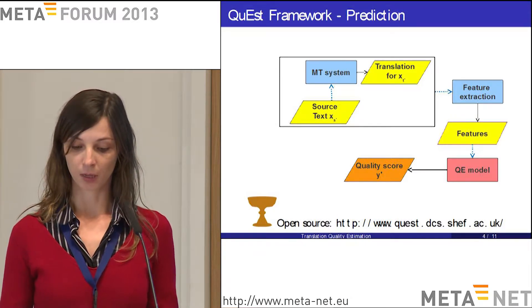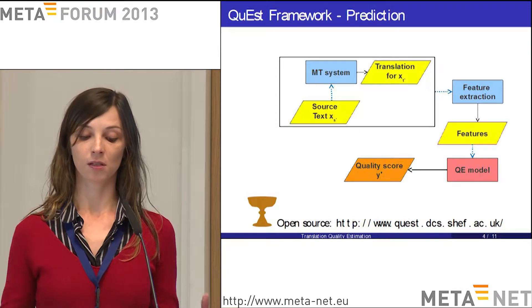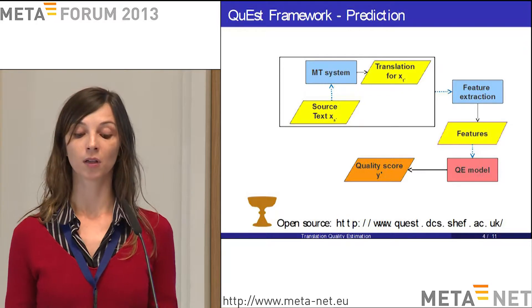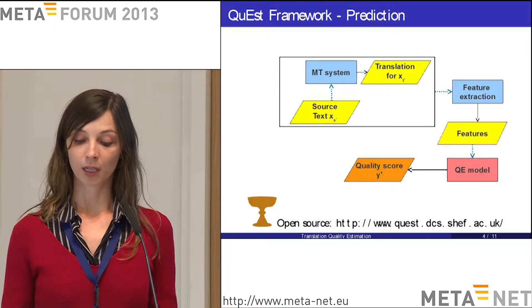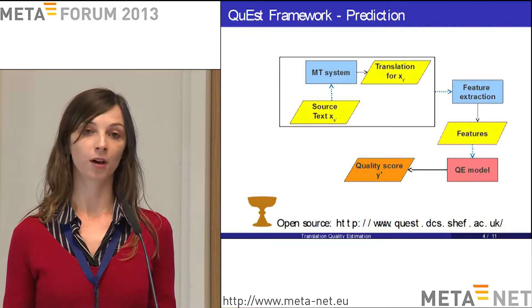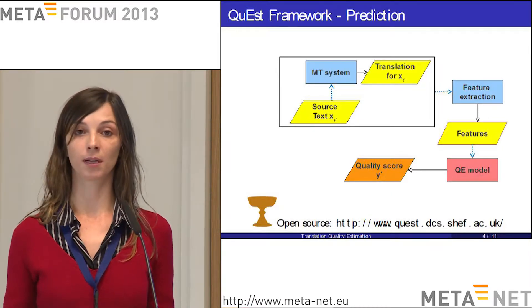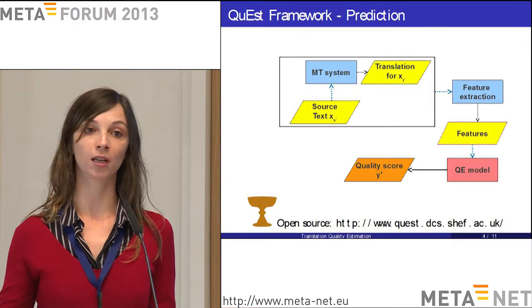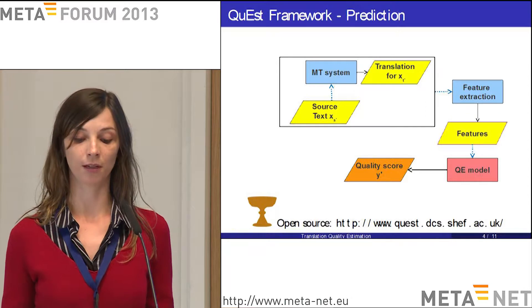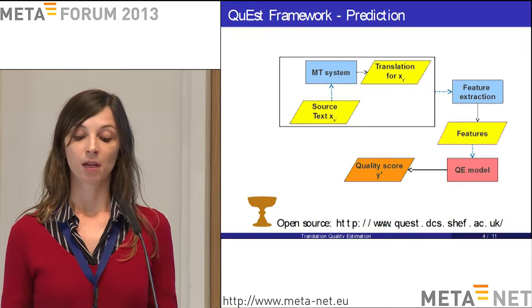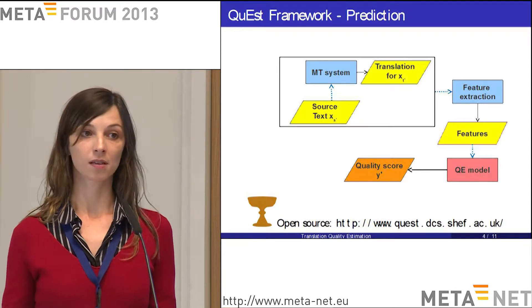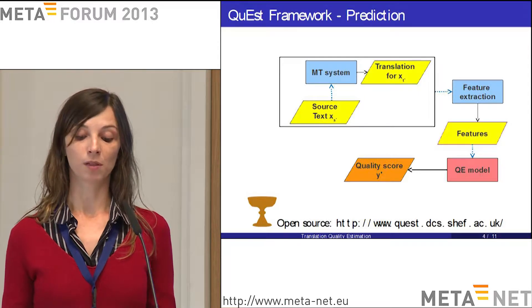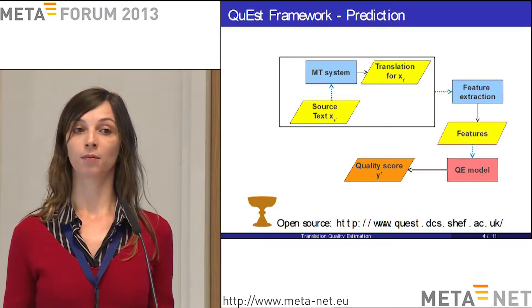It's a prediction model. Once built from human-labeled examples, we can use it to predict translation quality for any new sentence or segment — at sentence, text, word, or phrase level. We get the same MT system producing translations for new unseen texts, apply the same feature extraction process, use the model we built, and get a quality prediction at the end.